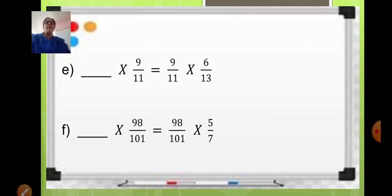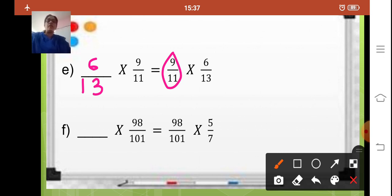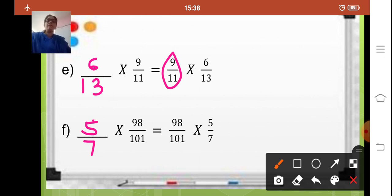Part E: dash multiplied by 9 upon 11 is equal to 9 upon 11 multiplied by 6 upon 13. Here 9 upon 11 is already written, so according to the first property — any two fractions, if you change the order the answer remains the same — the missing fraction is 6 upon 13. The last one: dash multiplied by 98 upon 101 is equal to 98 upon 101 multiplied by 5 upon 7. So in this blank you will write the fraction 5 upon 7.